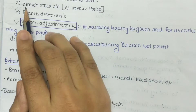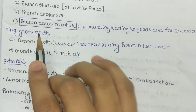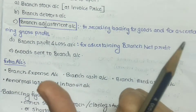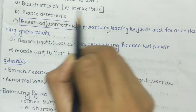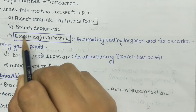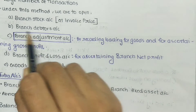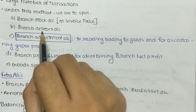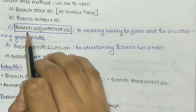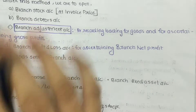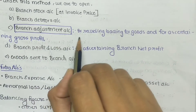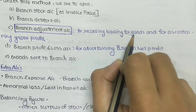The first account is the Branch Stock Account. In this account we enter all things that affect the stock, and we record it at invoice price. The next account is the Branch Debtors Account, which is prepared to find receivables, credit sales, closing debtors, and so on. The next account is the Branch Adjustment Account, which is an important account under this method.